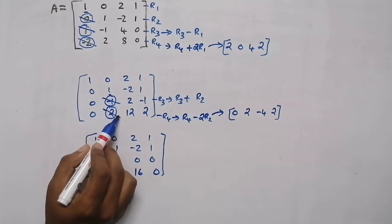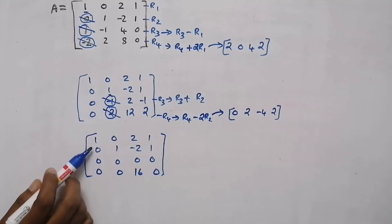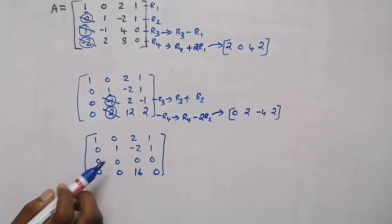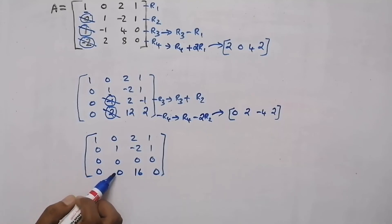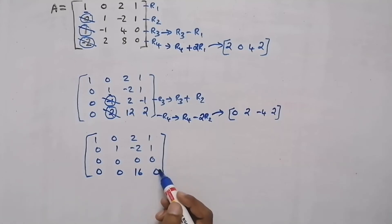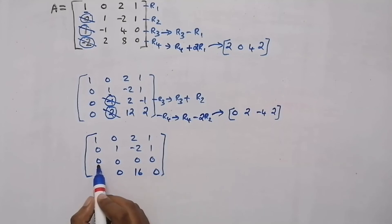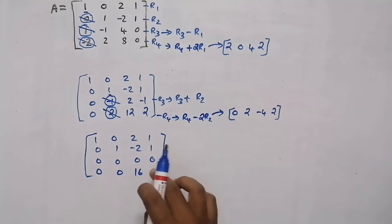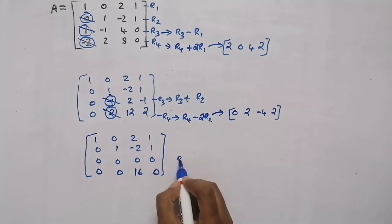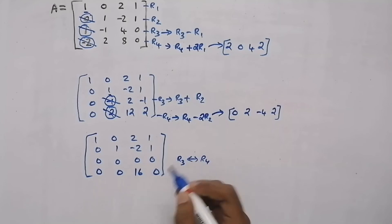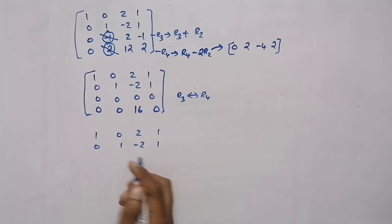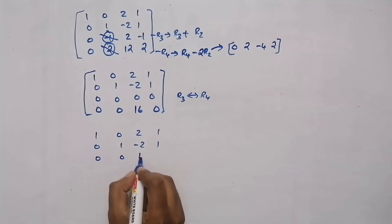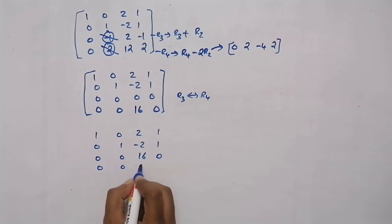We made this element also 0. All elements under the first leading 1 are 0, and all elements under the second leading 1 are also 0. Now we need to interchange these rows, because the third row has no non-zero values, but the fourth row does. So R3 and R4 should be interchanged. Our new matrix after interchange has the third row as: 0, 0, 16, 0.